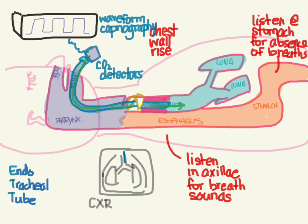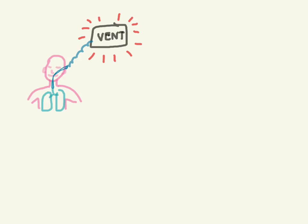We have a bunch of ways to check we've intubated correctly: look for chest wall rise, listen in the axilla for breath sounds, listen for absence of breath sounds in the stomach, look for CO2 production through colorimetric detectors or waveform capnography, and get a chest x-ray.